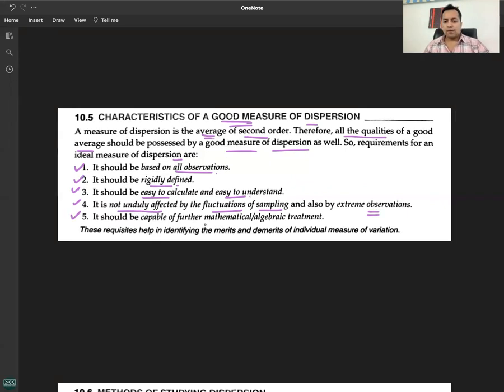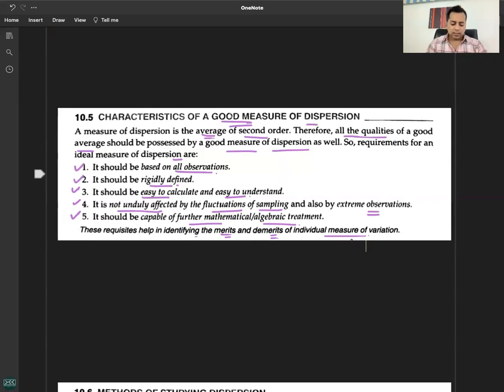These requisites help in identifying the merits and demerits of individual measures of variation. So the characteristics of a good average and the characteristics of a good measure of dispersion are very similar.